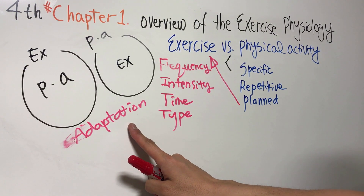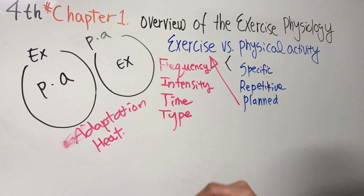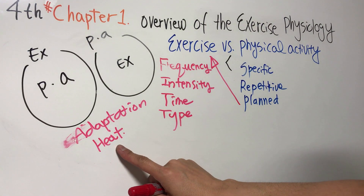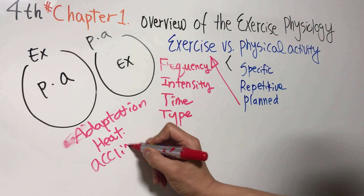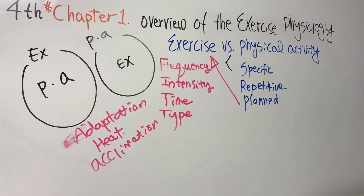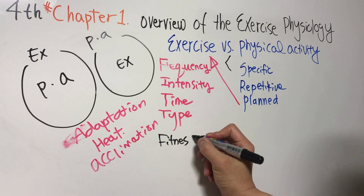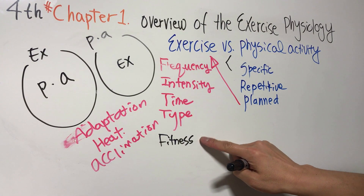For example, if you are exposed to heat for a long time in summer, you become resistant to heat, right? We can call this phenomenon acclimation. Anyway, exercise improves your fitness, right? This is the result of adaptation.